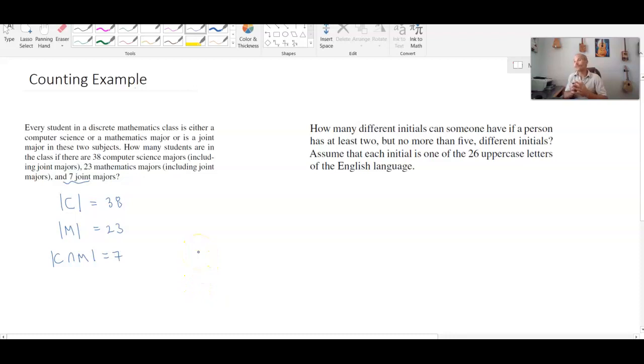Now we can use this idea that we take the number of elements in one set plus the number of elements in the other set minus the number of elements in their intersection to figure out how many students there are in total.